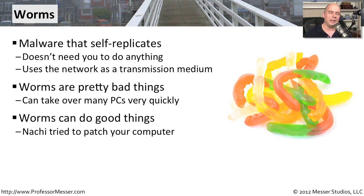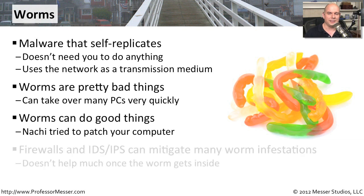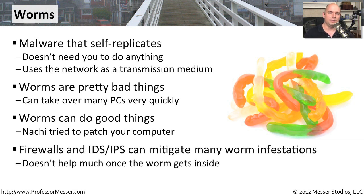There was one worm called NACHI where we tried to make it good — it attempted to patch different pieces on your computer to restrict other worms from accessing your device, though it wasn't the best patching approach. Usually you would have some type of firewall, intrusion detection, or intrusion prevention system in place to identify when worms are coming across the network and stop them before they come inside.